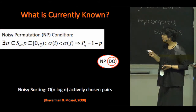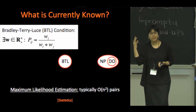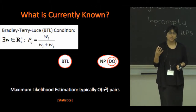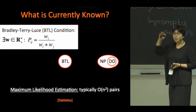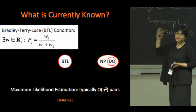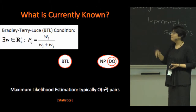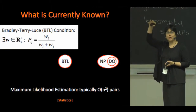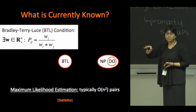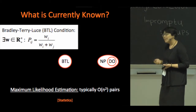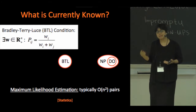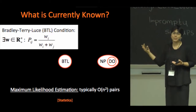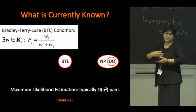Another widely studied condition in statistics is the Bradley-Terry-Lewis or BTL condition, where there's a score w_i for each item, and the probability of i beating j is just its score divided by the sum of the two scores. Here, one often performs maximum likelihood estimation using comparisons of all N squared pairs — so there's no active selection, one just uses all pairs.